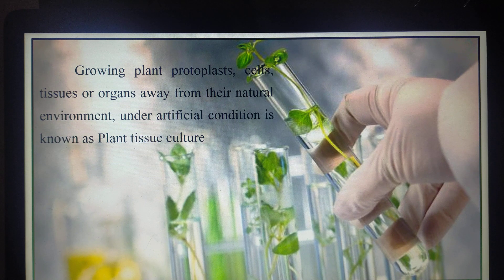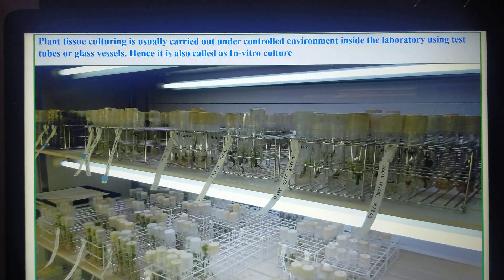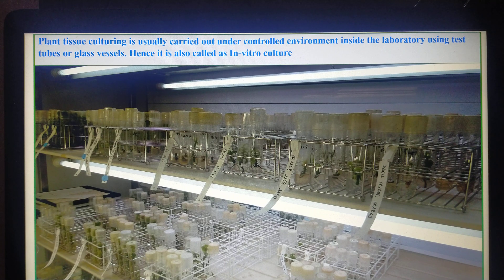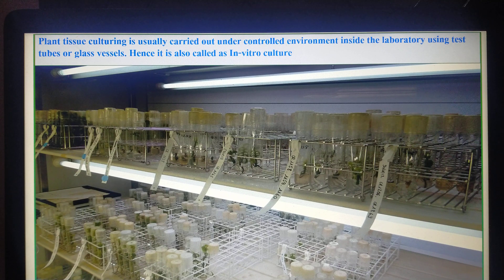The definition once more: growing the plant protoplasts, cells, tissues, or organs away from their natural environment under artificial conditions — the condition is given artificially. We have to provide proper temperature, sufficient light energy, proper photoperiodism, humidity — everything is under control. The optimum level has to be maintained, and the entire plant tissue culture is a highly sophisticated and complicated process requiring a lot of processes and formalities.